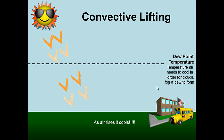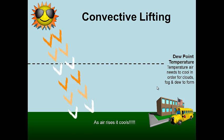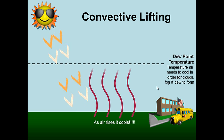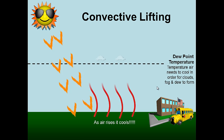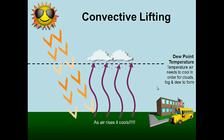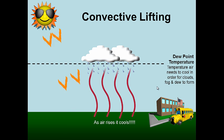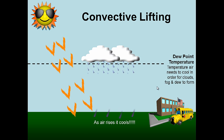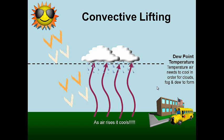Convective lifting is simple: the sun heats the land, and the land heats the air above it, and the air rises. As air rises it cools, and at the dew point temperature we get clouds. Convective lifting is just hot air rising as a result of a heated surface or land.